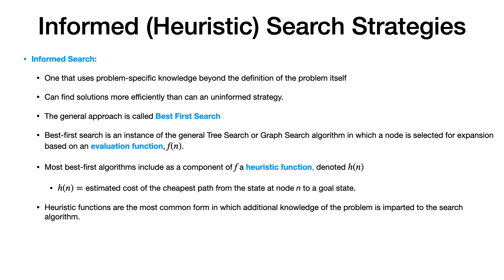h(n) is the estimated cost of the cheapest path from node n to the goal state. Our main objective is to start from the initial node and reach the goal node. h(n) gives us an estimate from the current node to the goal node, and this is one component of f(n), which is the evaluation function. Using these f(n) values, we try to pop nodes from the frontier and expand them to move forward.